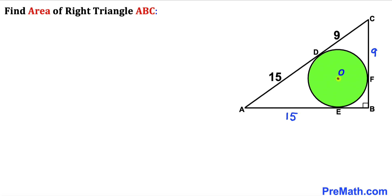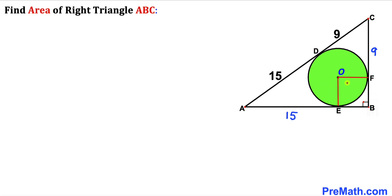Next, let's connect the center O with the two points of tangency E and F. We can see that OF and OE are the radii of the green circle. We can also see that we are dealing with a square OEBF, so each side length equals the radius r.